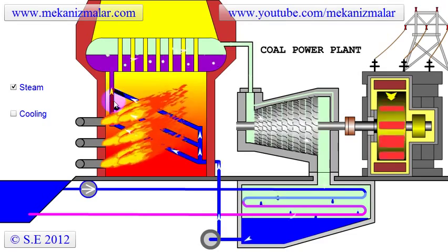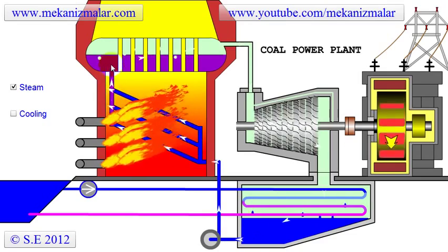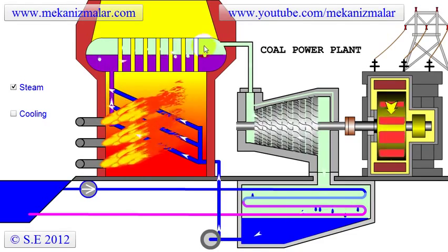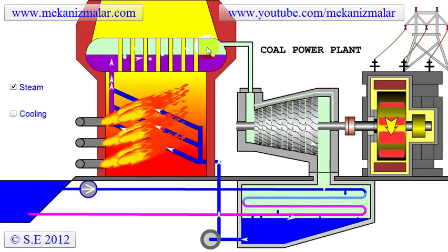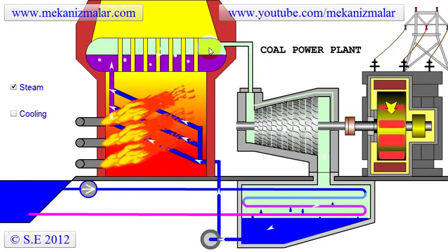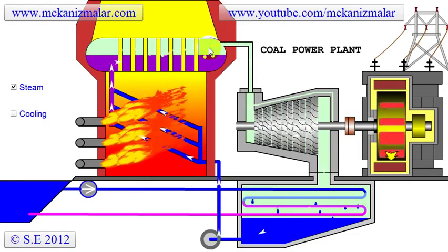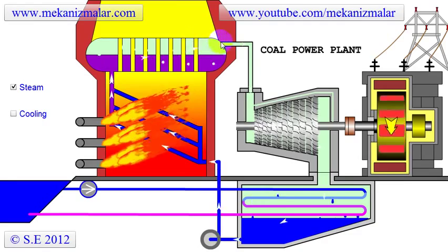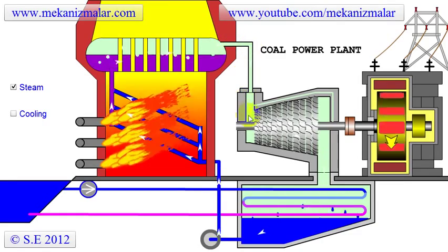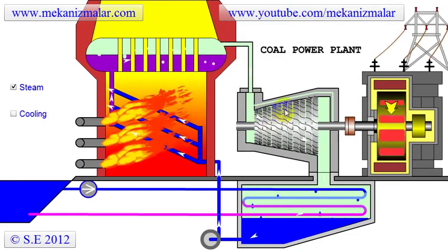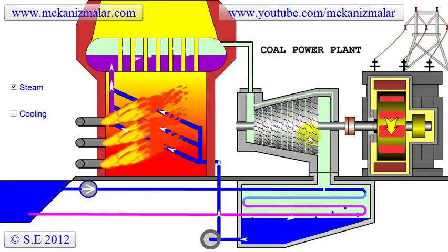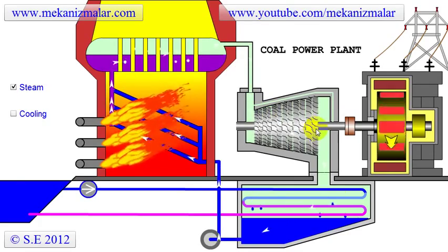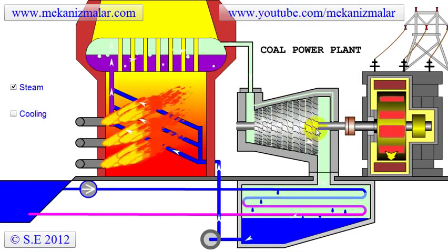This heated water is forced to the boiler where it evaporates. The pressure inside the boiler can be more than 200 bars. The high-pressure steam obtained in the boiler is sent to the steam turbine, which passes the steam between fixed and rotating sections, converting the energy stored in the steam to mechanical energy.